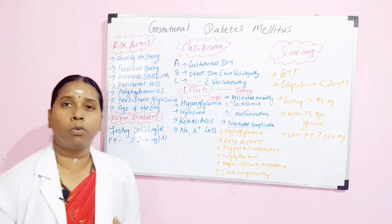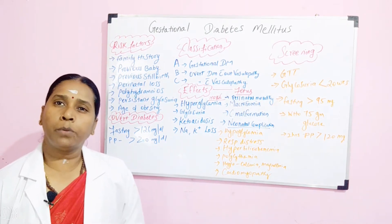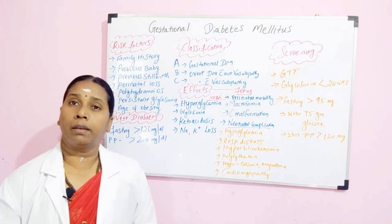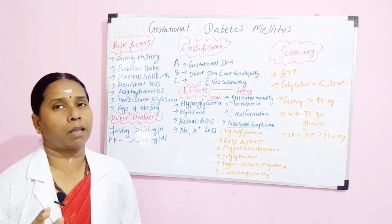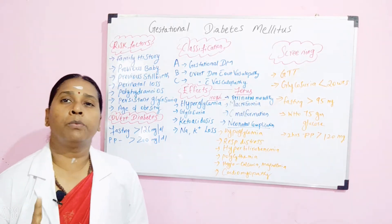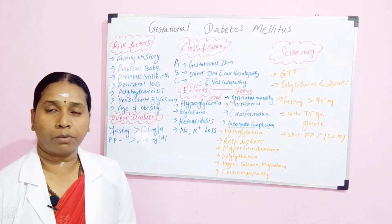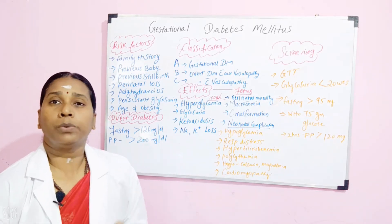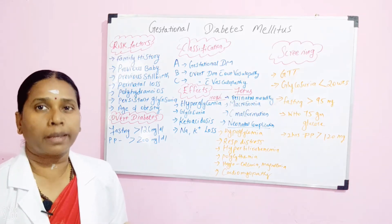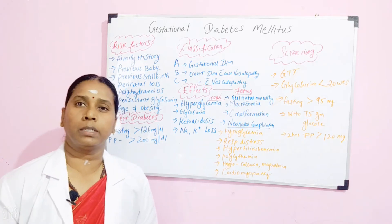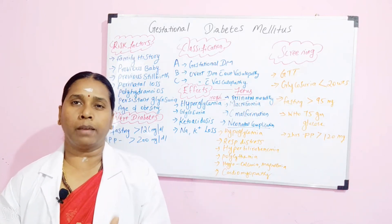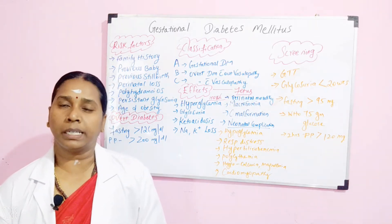Then coming to overt diabetes — what is overt diabetes? It is again an abnormal condition in diabetes. Here, the fasting blood glucose level is going to be more than 126 mg per dL, whereas normal must be less than 80. When we come to the postprandial level — that is the sugar level checked after 2 hours of food — if it is more than 200 mg per dL, you have to consider it is overt diabetes. In both the fasting and postprandial conditions the sugar level is very high.